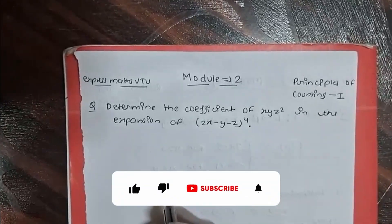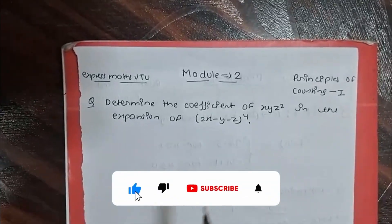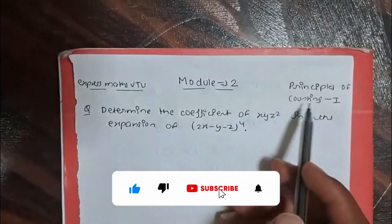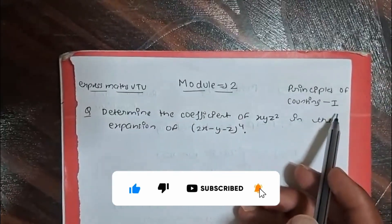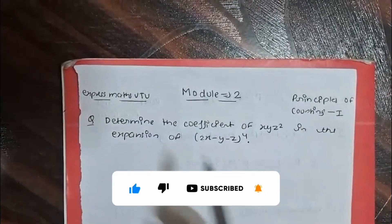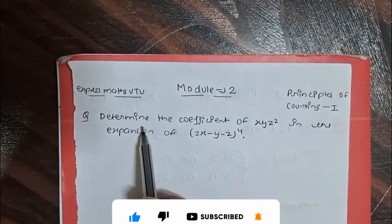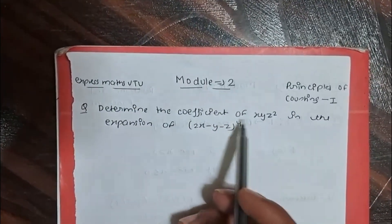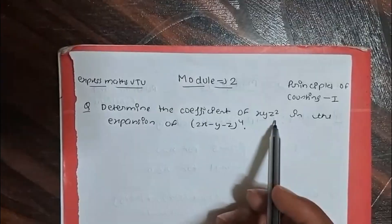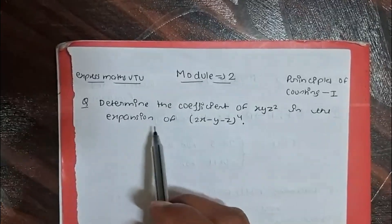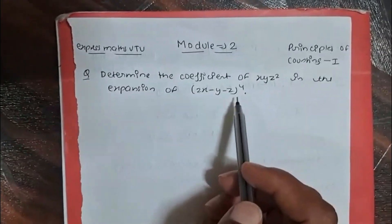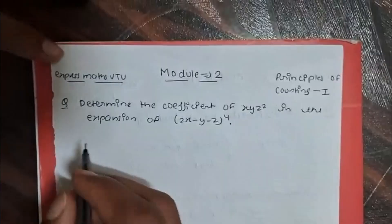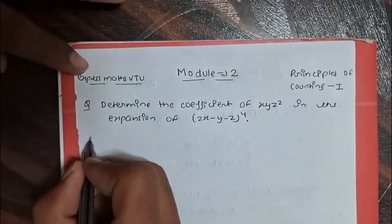Hello everyone, today we are going to solve another important question from module 2 on the principle of counting. The question is: determine the coefficient of x·y·z² in the expansion of (2x - y - z) to the power 4.